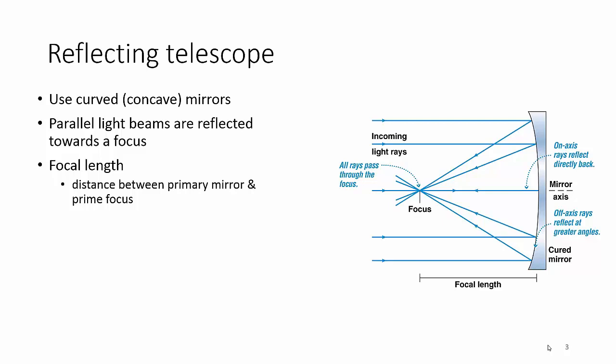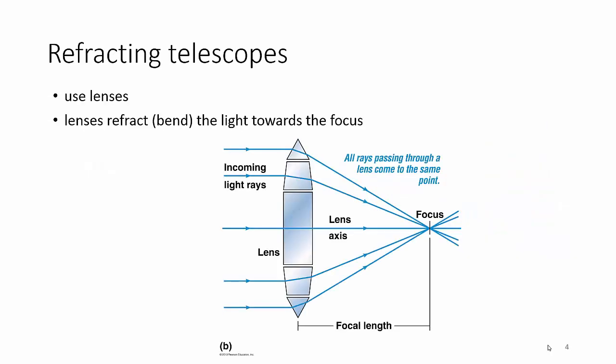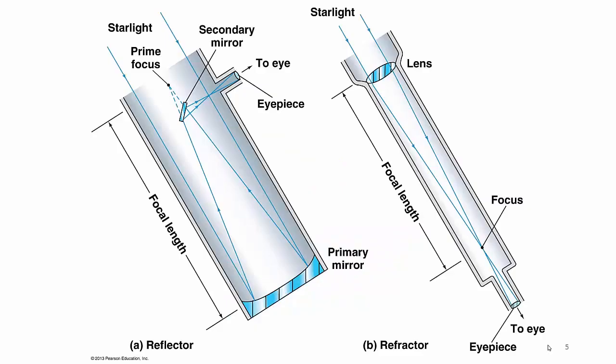Refracting telescopes don't use mirrors, they actually use lenses. All the light comes in the same direction and the lens will bend the light as it goes through. The light bends into a focus, and again you have the focal length, same definition.